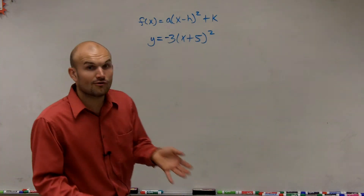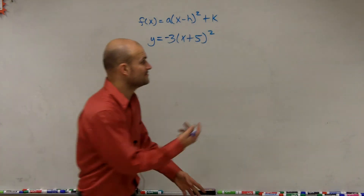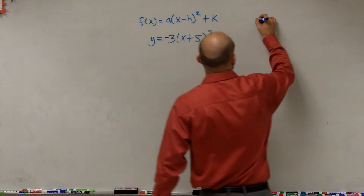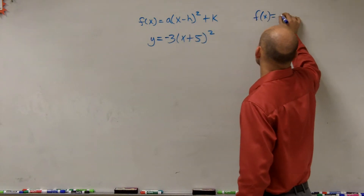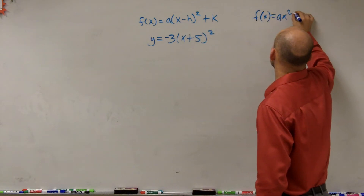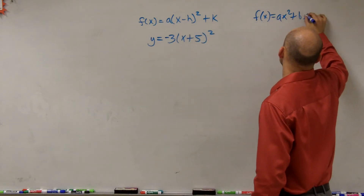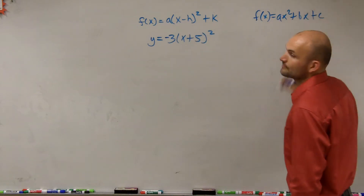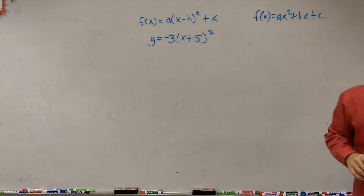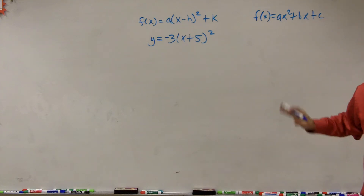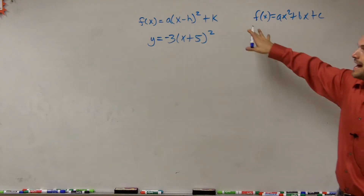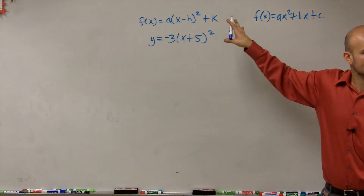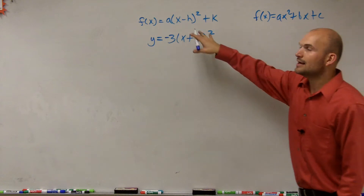So ladies and gentlemen, so far in this class, we've gone over and reviewed f of x equals ax squared plus bx plus c. So far, we've gone and reviewed that. Now, that's what we call our standard form.